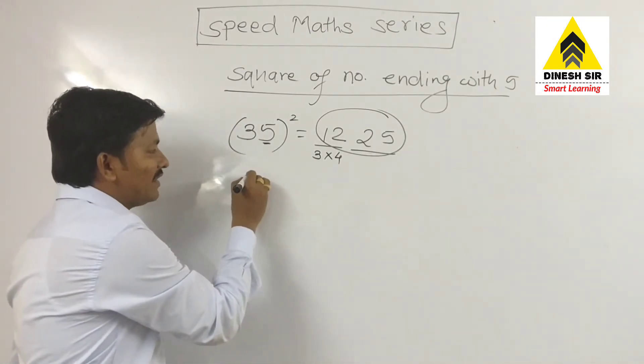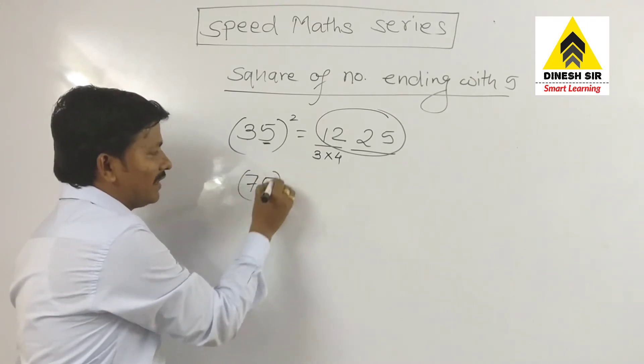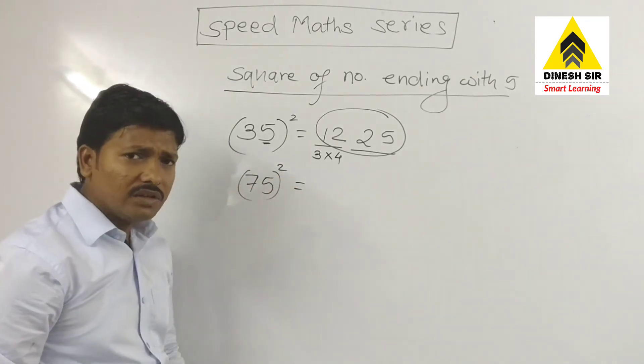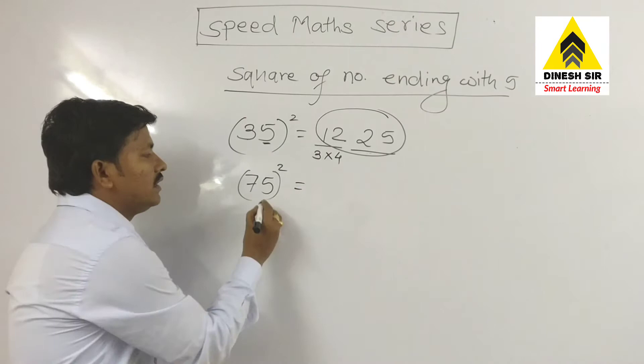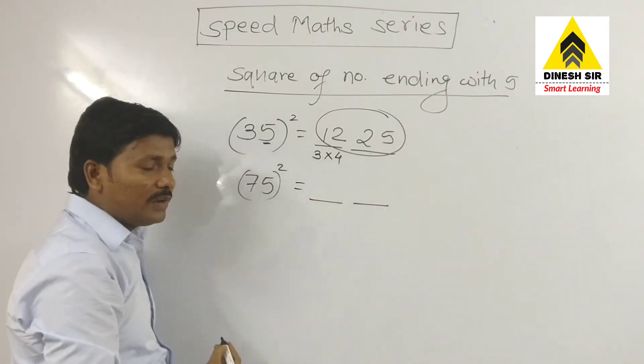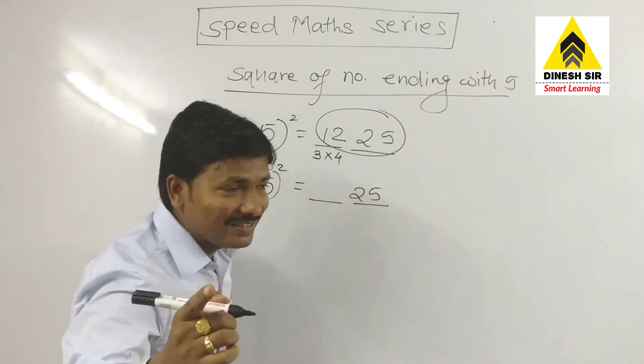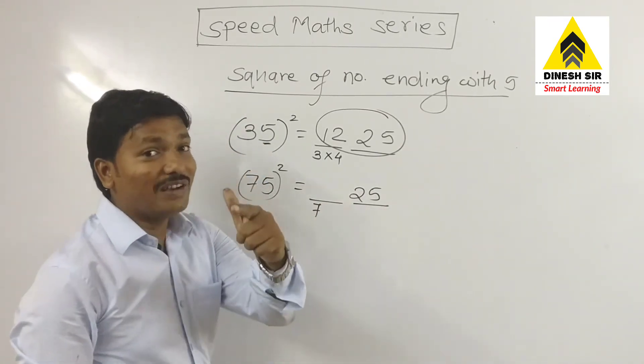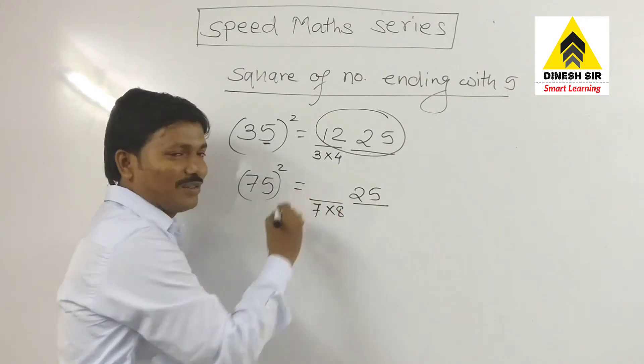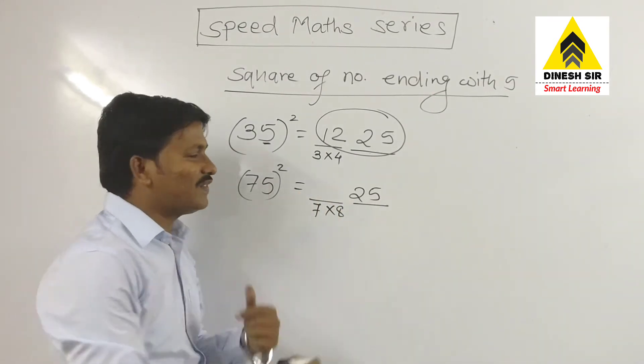If I take 75 square, now here how to solve this? Again we are having two places, write square of 5, 25 here. Then take the first number, multiply with the conjugate number. 7 times 8 is 56.